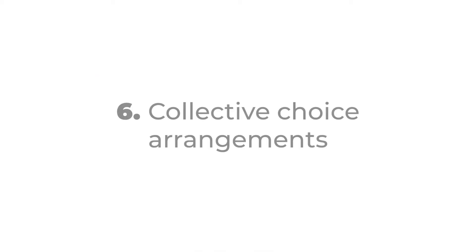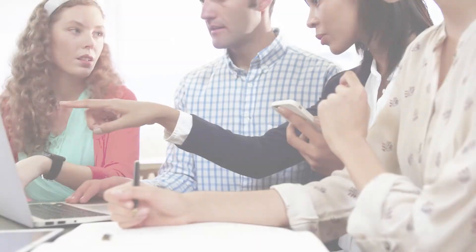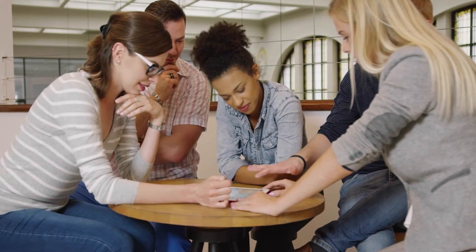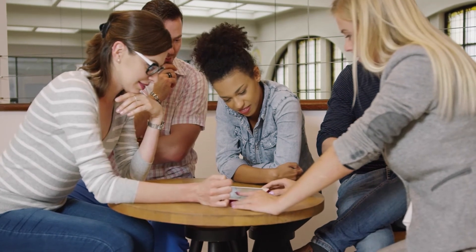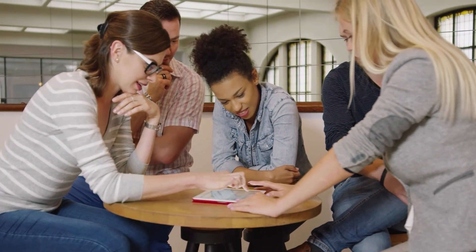6. Collective choice arrangements. This relates to understanding to what extent stakeholders are involved in the process, and if individuals affected by rules can participate in the modification of the operational rules and decisions.